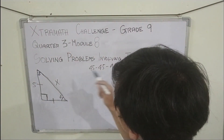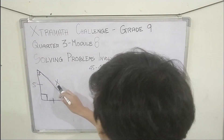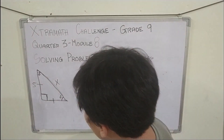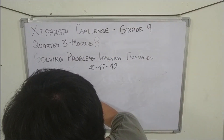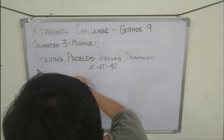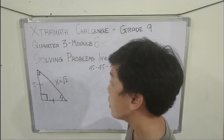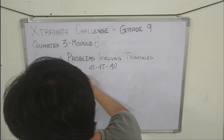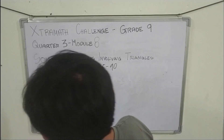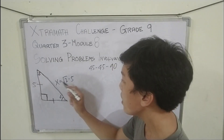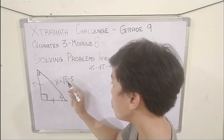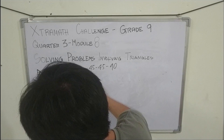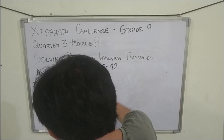The theorem states that the hypotenuse, or the longest side, is square root of 2. So we're going to equate it to square root of 2 times the shorter length. Our shorter length is 5, so x is equal to square root of 2 times 5, which gives us x equals 5 square root of 2.